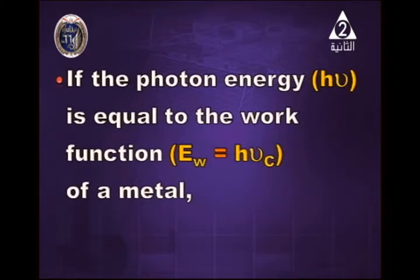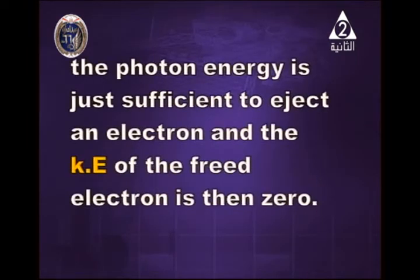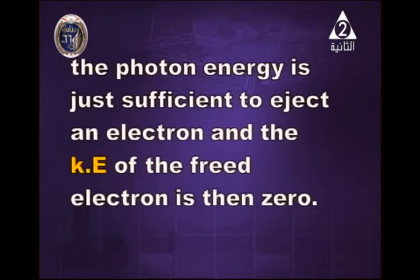If the photon energy is equal to the work function — EW equals H·νc, where νc is the threshold frequency, cutoff frequency, or critical frequency — the photon energy is just sufficient to eject an electron, but the kinetic energy of the freed electron is then zero. Electrons are ejected, but kinetic energy of the electrons equals zero. This happens when the energy of the incident photon is equal to the work function of the metal.